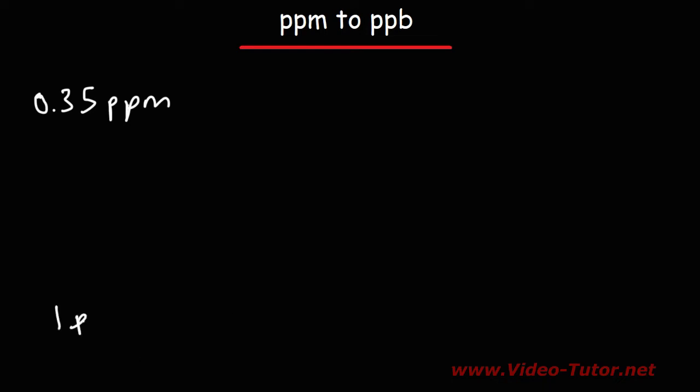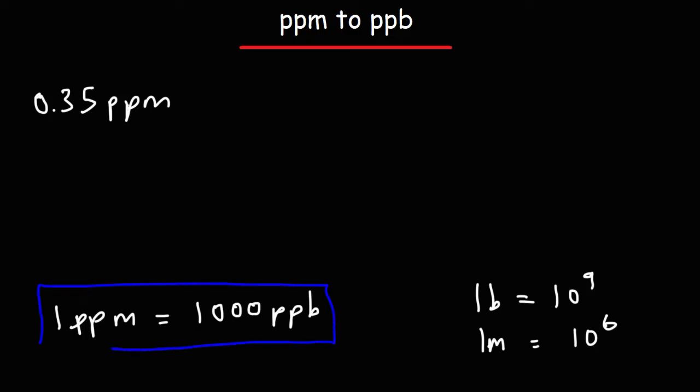Well, it's important to know that 1 ppm is equal to 1,000 parts per billion. A billion is 10 to the 9, and a million is 10 to the 6. So these two numbers differ by 1,000. And so it turns out that 1 part per million is 1,000 parts per billion. It's kind of inverted, but 1 is 1,000 times greater than the other.